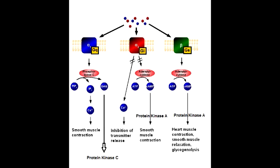On the other end, IP3 stimulates the endoplasmic reticulum to release calcium, increasing intracellular calcium levels. This calcium is important in the smooth muscle contraction seen when these receptors are stimulated. One memory tip: GQ has all the Cs — phospholipase C, protein kinase C, and increase in calcium.